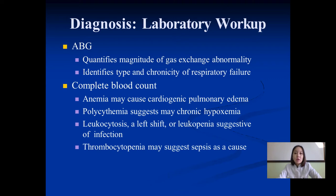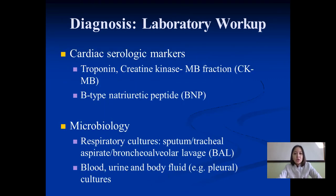Laboratory analysis: ABG quantifies the magnitude of gas exchange abnormality and identifies type and chronicity of respiratory failure. Complete blood count may reveal anemia, polycythemia, leukocytosis, leukopenia, or thrombocytopenia. Cardiological markers include troponin, CK-MB, and B-type natriuretic peptide. Microbiology: respiratory cultures including sputum, tracheal aspirate, bronchoalveolar lavage, as well as blood, urine, and body fluid cultures.